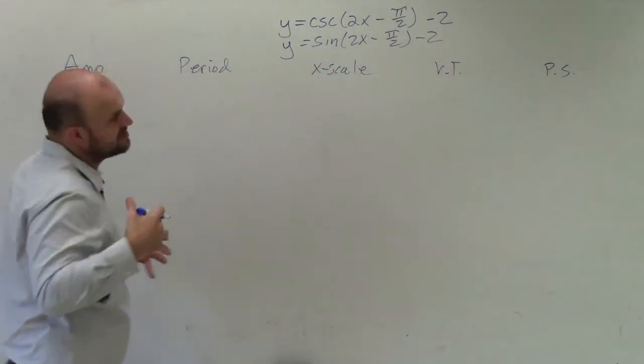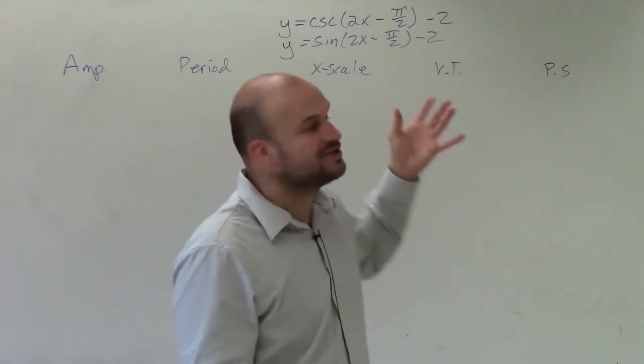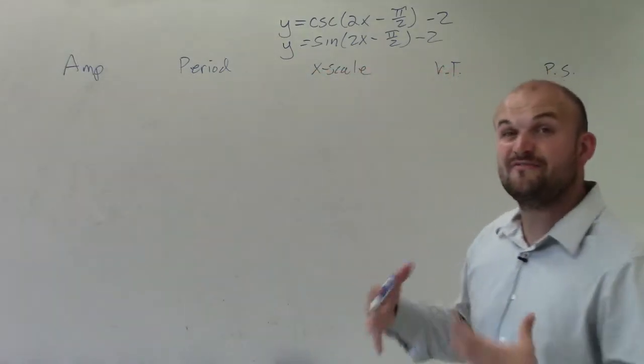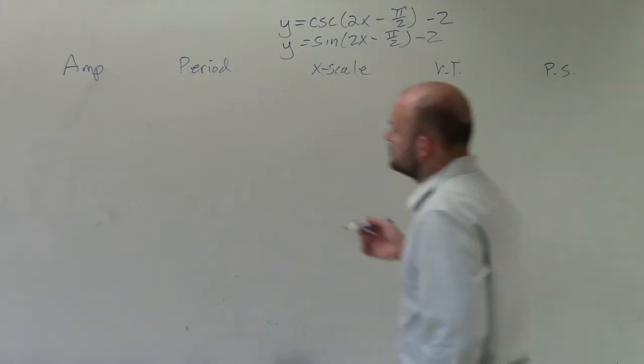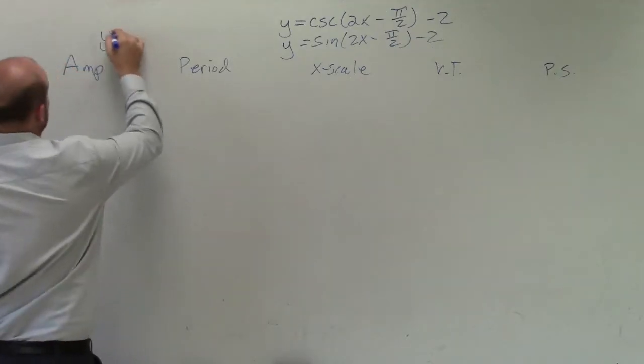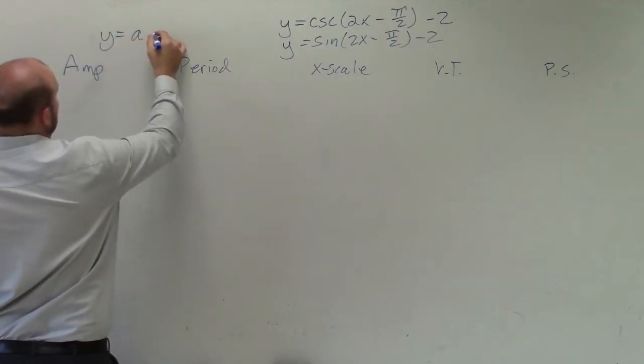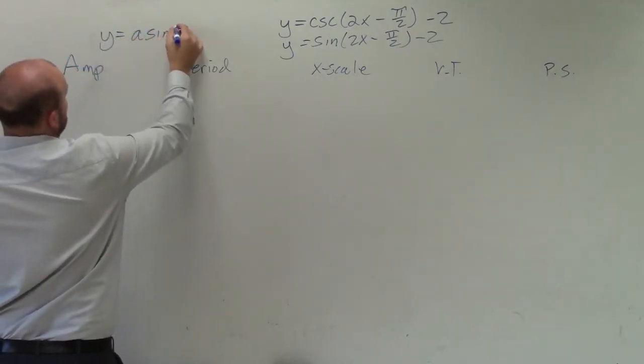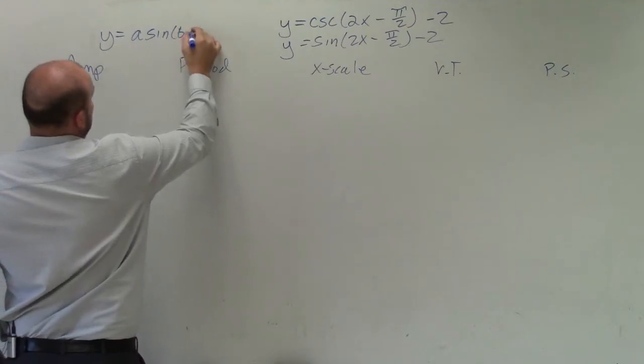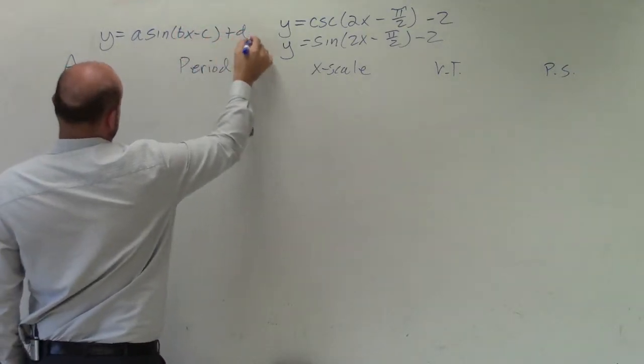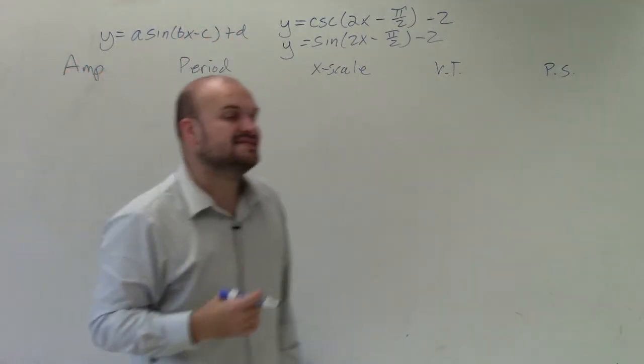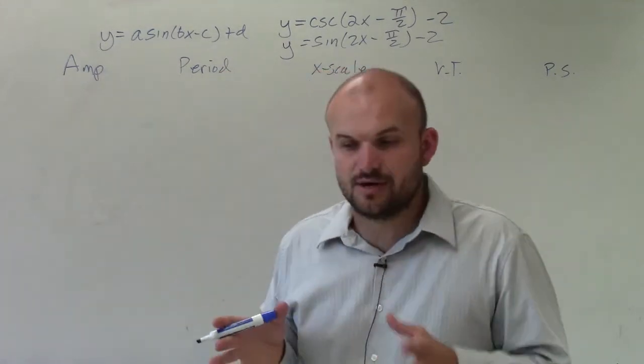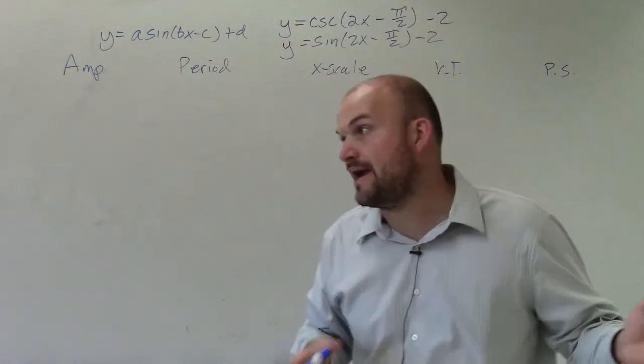We need to understand how all these numbers and variables are affecting our graph. We want to know this transformation equation, which is y equals a times sine of bx minus c plus d, where a, b, c, and d are all going to have some way that are going to be affecting the graph.